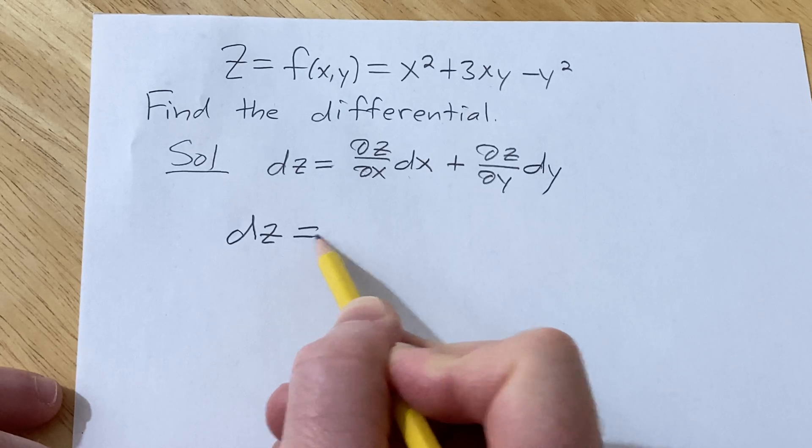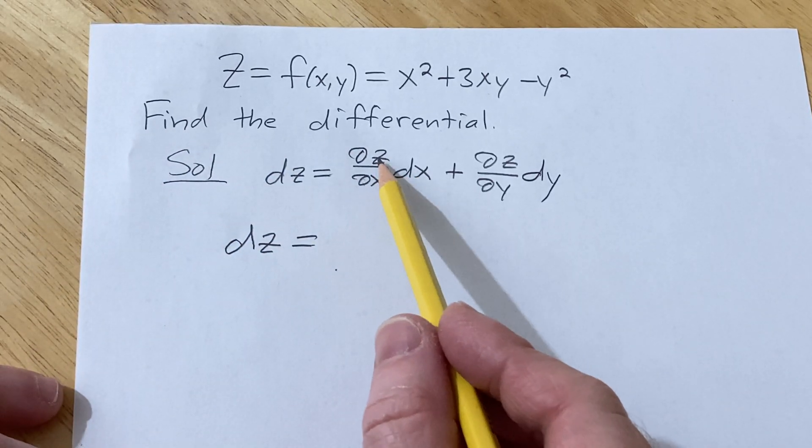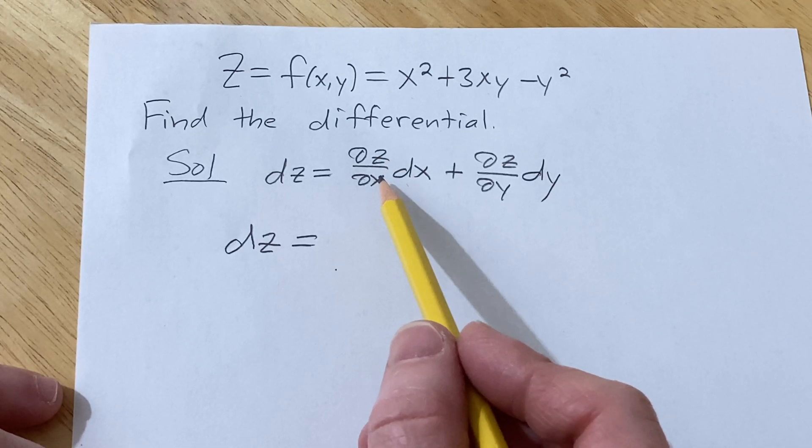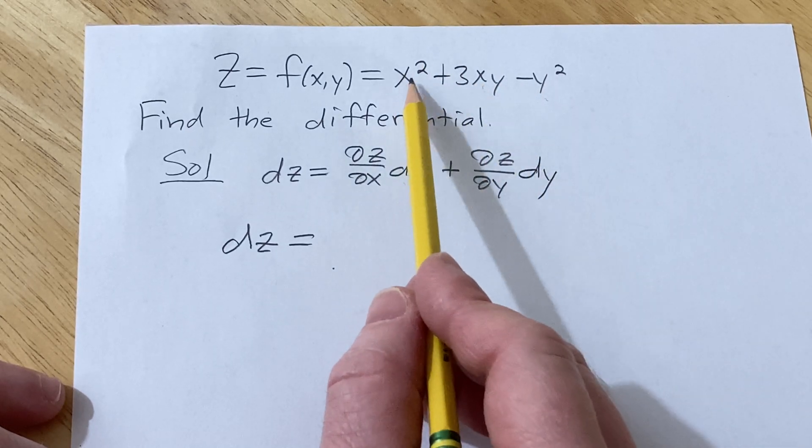So dz is equal to, when we're computing ∂z/∂x, we are computing a partial derivative with respect to x. So you treat all of the other variables as constants. In this case, all of these y's are constants, and you only differentiate the x.